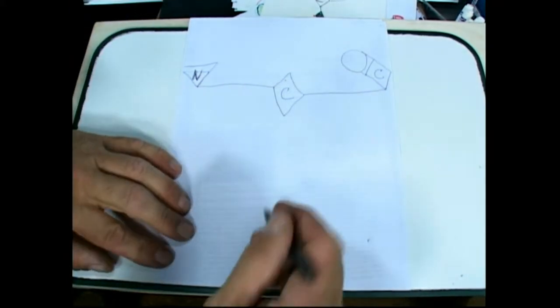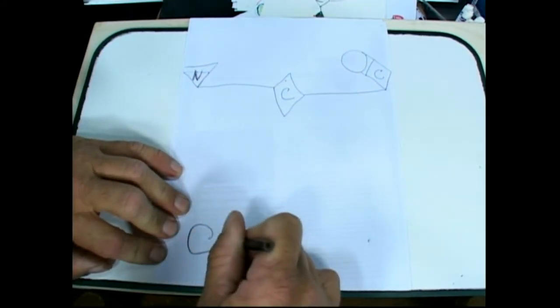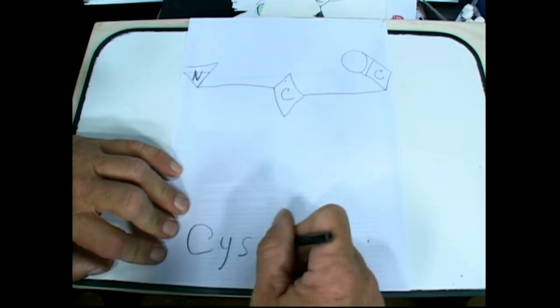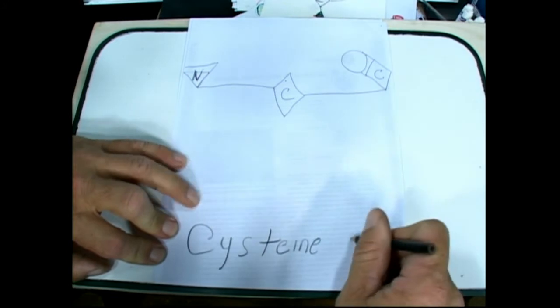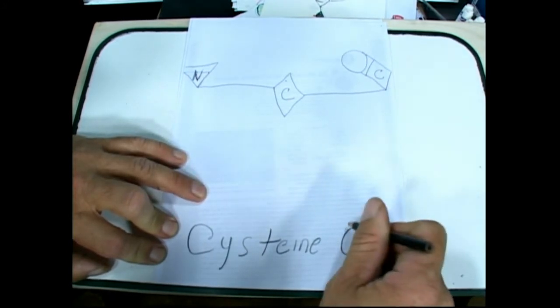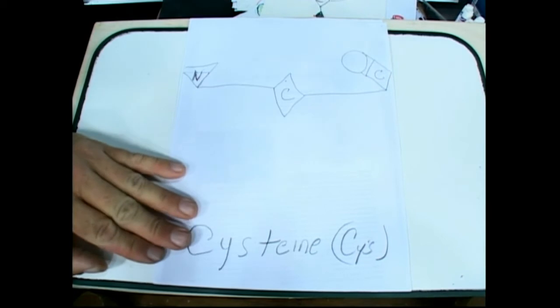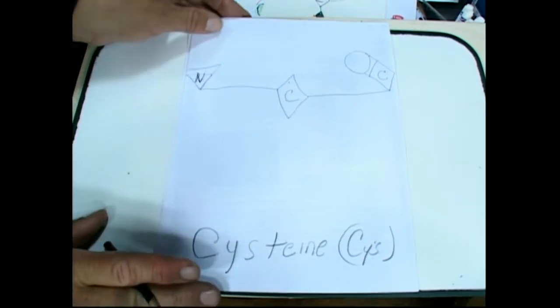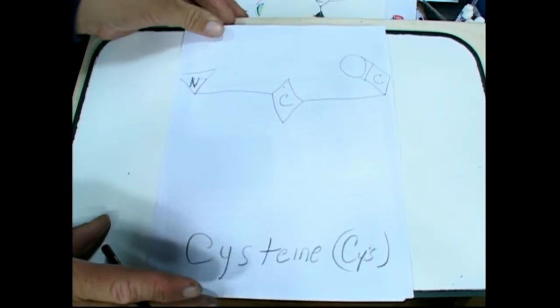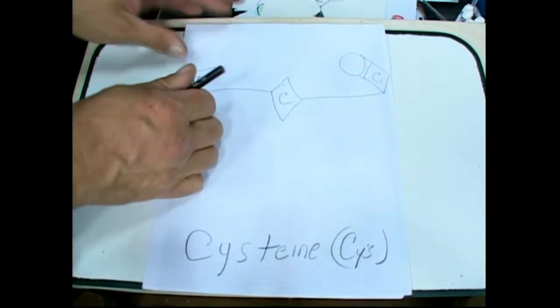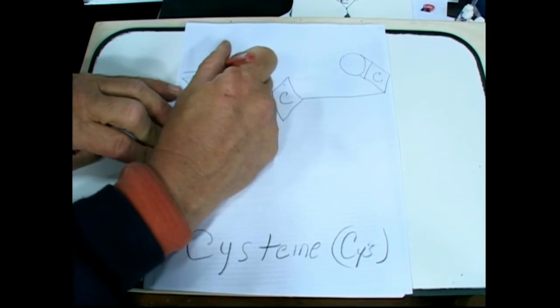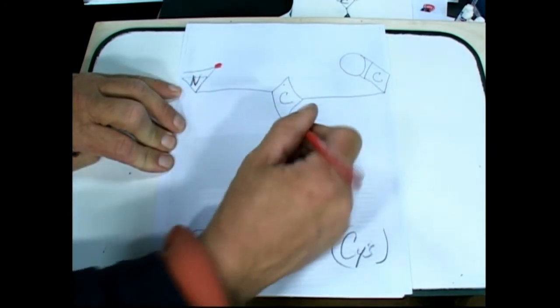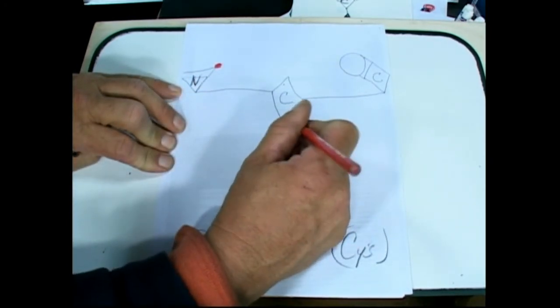The color pencil seems to be working better than the pen, so we're going to stick with that. Cysteine, C-Y-S-T-E-I-N-E. C-Y-S is the three-letter designation. That's a good one, I agree with that. So cysteine, let's color in the backbone here so we can get this thing looking more colorful.